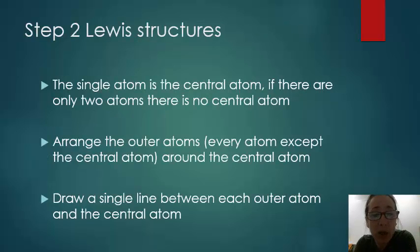Step two is identify the central atom. The single atom is the central atom, and if there are only two atoms there's no central atom, and those two atoms have to be connected to one another. But if there's more than two atoms, then there has to be a central atom, and the central atom is the atom that there's only one of. Arrange the outer atoms, every atom except the central atom, around the central atom, and then draw a single line between each outer atom and the central atom, and that line is going to represent a covalent bond.